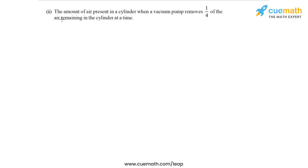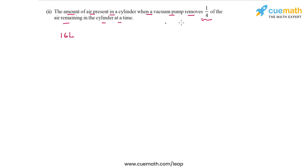Now let's go to part 2. The situation says: the amount of air present in a cylinder when a vacuum pump removes one-fourth of the air remaining in the cylinder at a time. This is a slightly tricky one. Let's take an actual initial volume of the cylinder and see what happens if we remove one-fourth of the air at a time. Suppose the initial air in the cylinder is 16 liters — a multiple of 4, so it's easy to calculate.